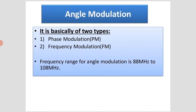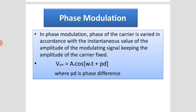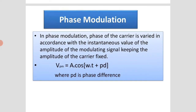In angle modulation, it is basically of two types: phase modulation (PM) and frequency modulation (FM). The frequency range for angle modulation is 88 MHz to 108 MHz. We will see both types — firstly, phase modulation, and then frequency modulation.